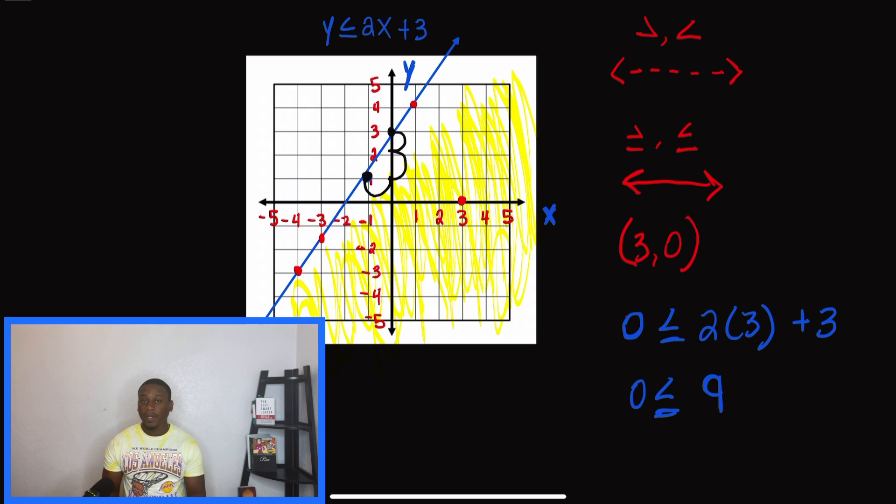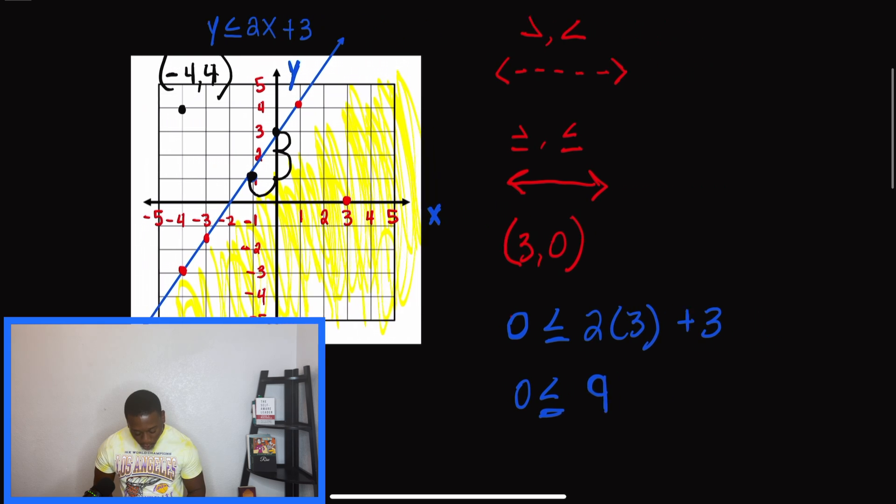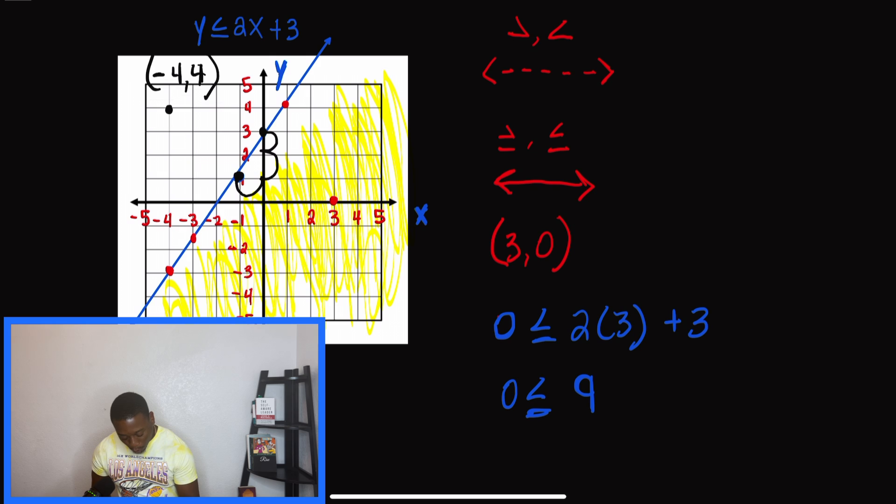This is another way to check. Let's say we pick a different point. Let's say I pick the point (-4, 4). What we're going to do is take this point and determine whether it's a true or false statement so we can know which side to shade. Now we substitute.